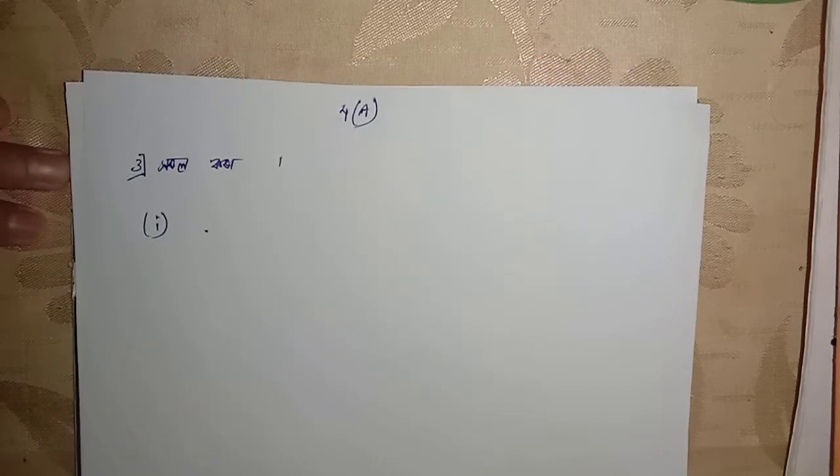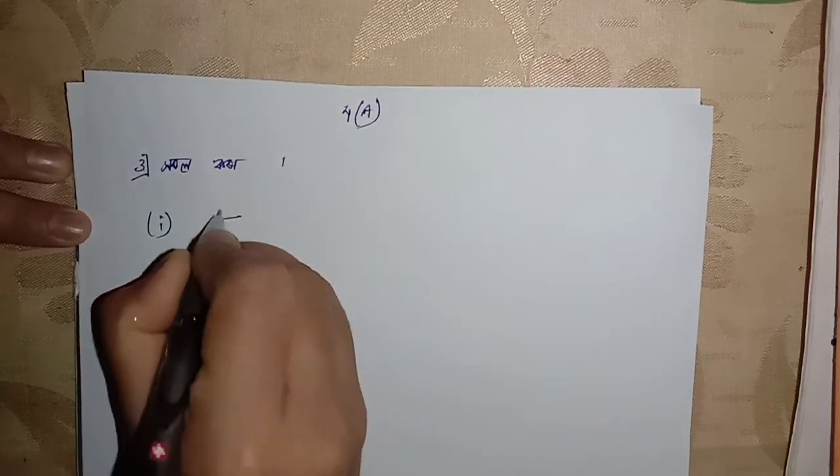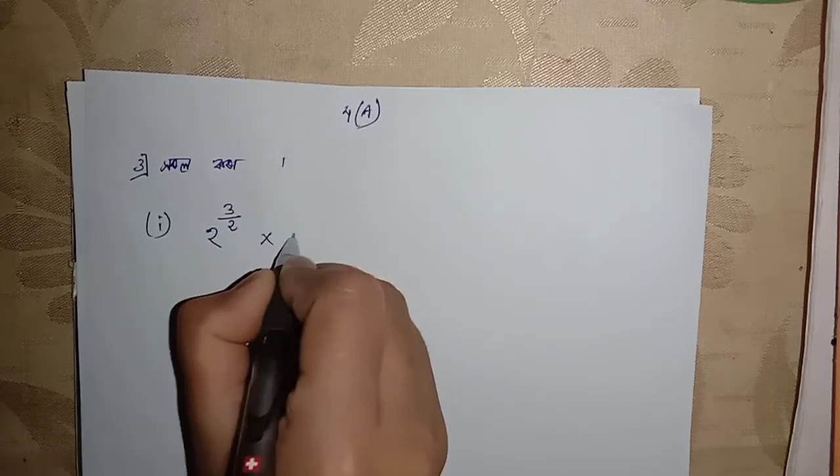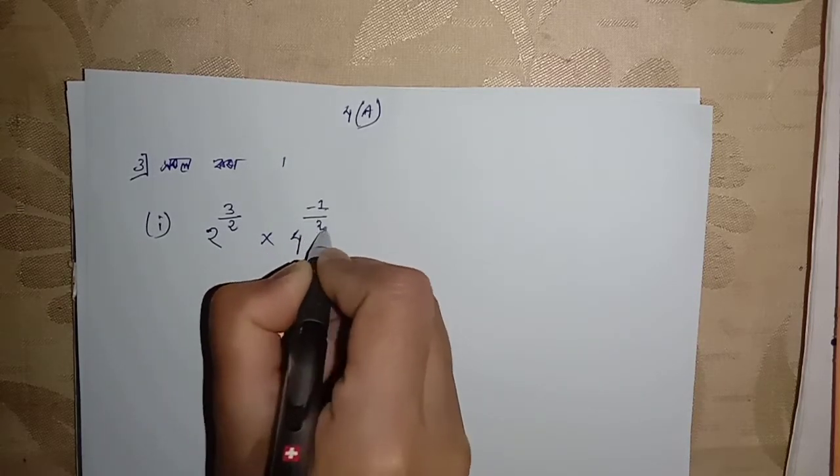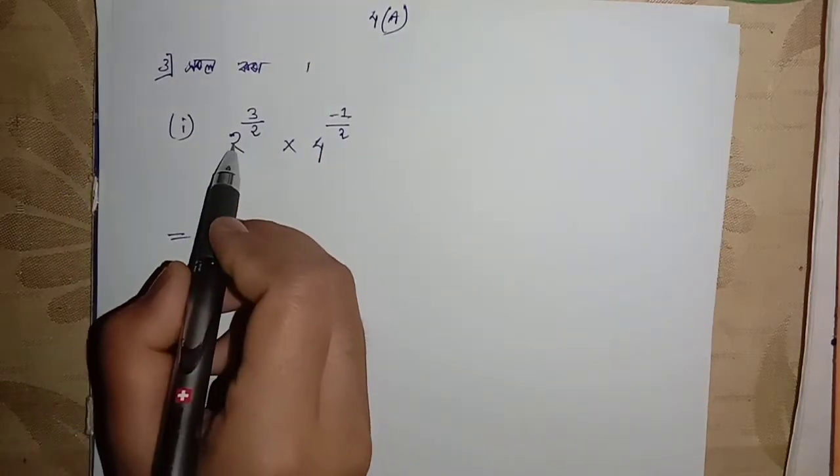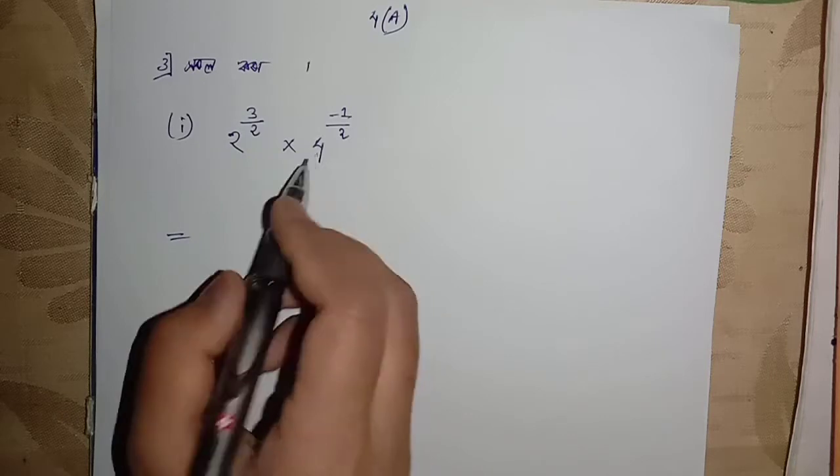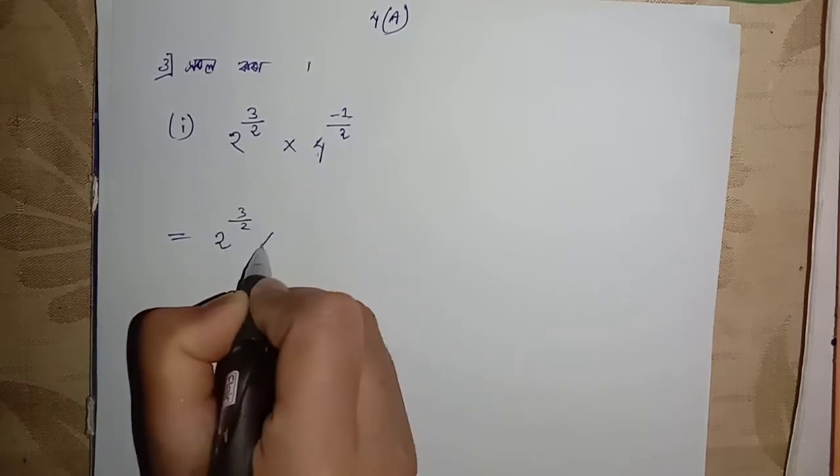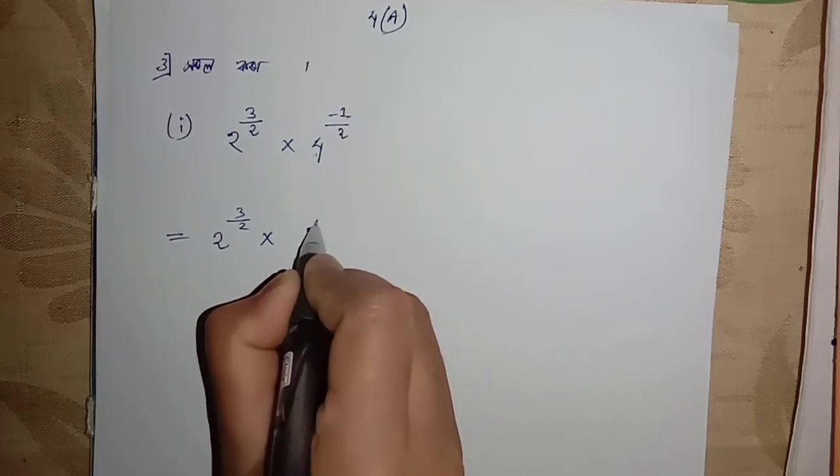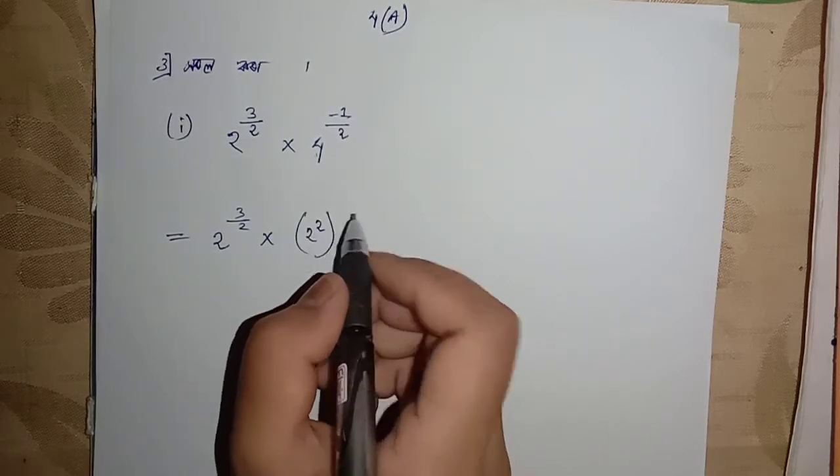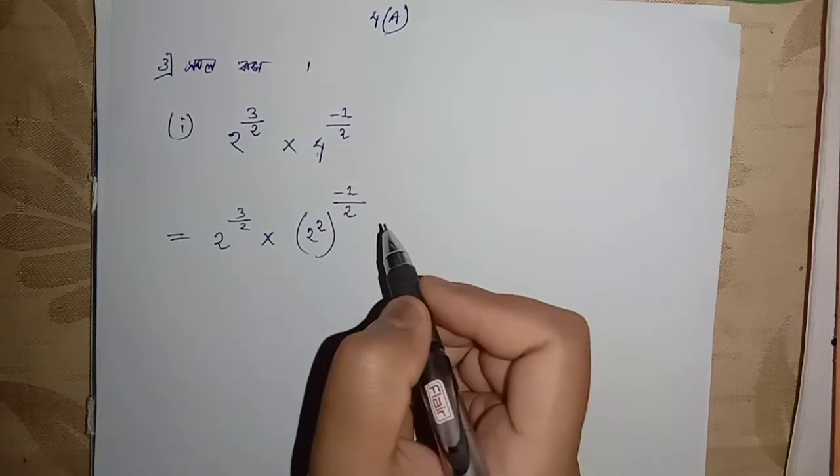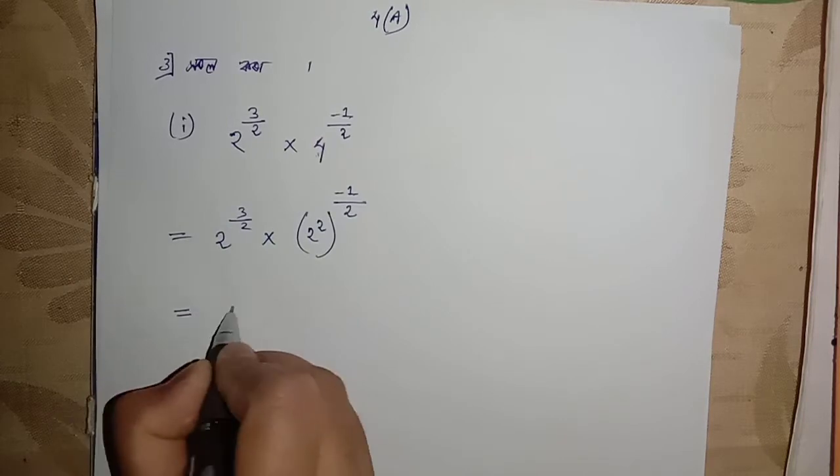First question is 2 to the power negative 2 by 3 into 4 to the power negative 1 by 2. We have 4 to the root, we have 2 divided by 2.